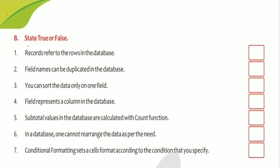Third: you can sort the data on one field — that is also False. You can sort the data in every field, not only one field. Fourth: field represents a column in the database — that is True, just like records are called rows, fields are called columns.